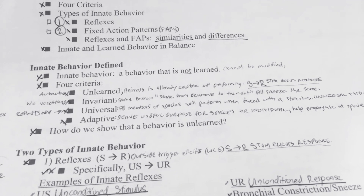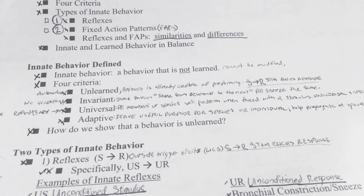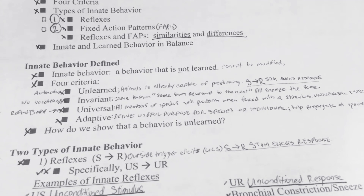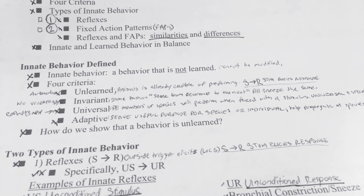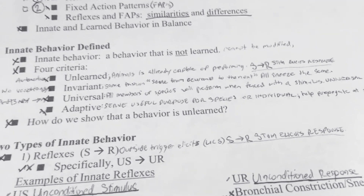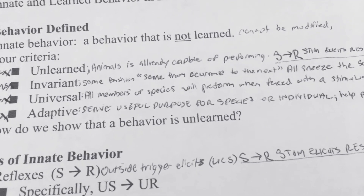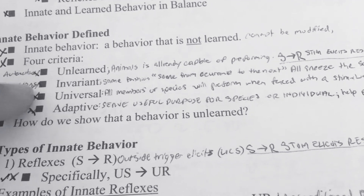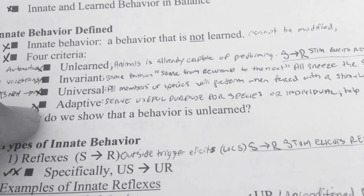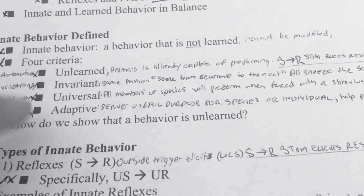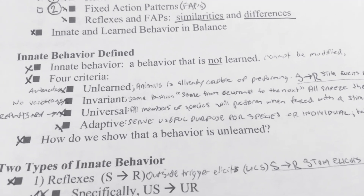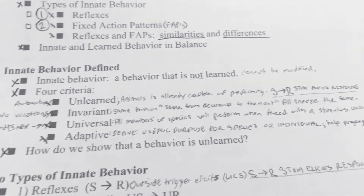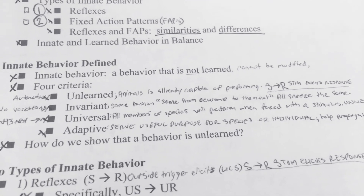Innate behavior cannot be modified — it's cemented in your being. It happens in both animals and humans. There are four criteria to identify an innate behavior: unlearned, invariant, universal, and adaptive. These help you categorize whether something is truly an innate behavior.